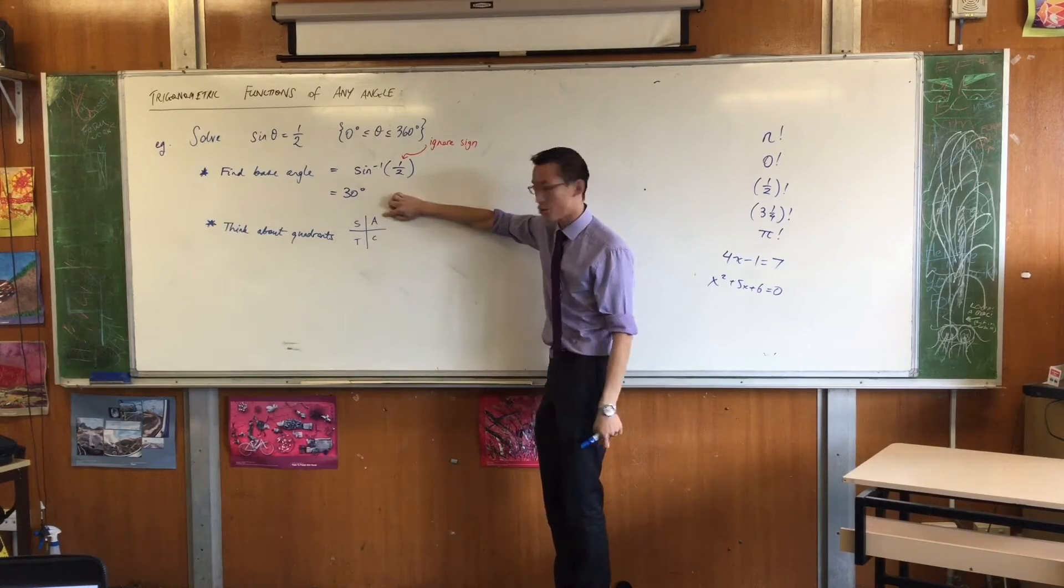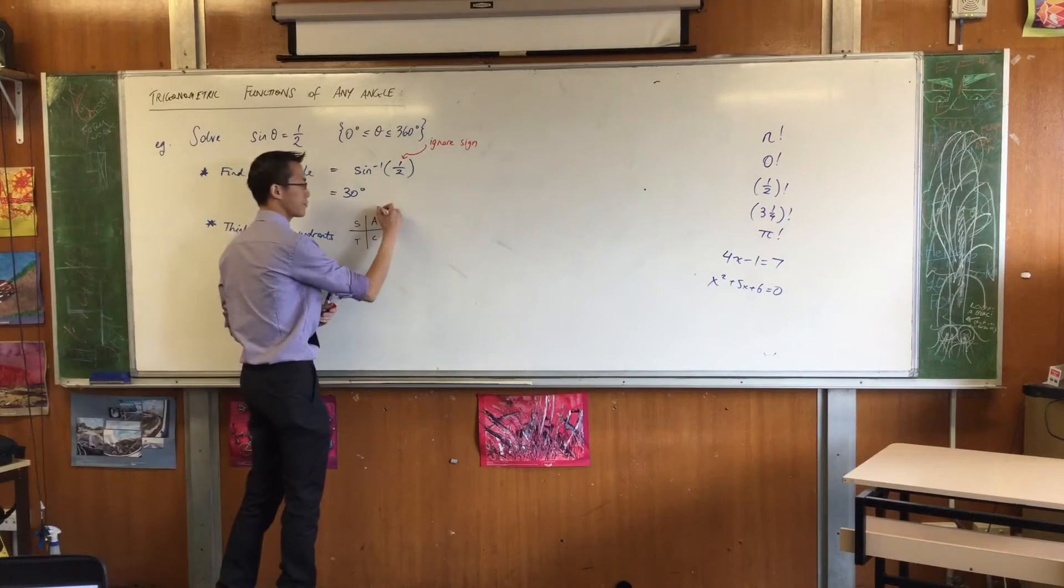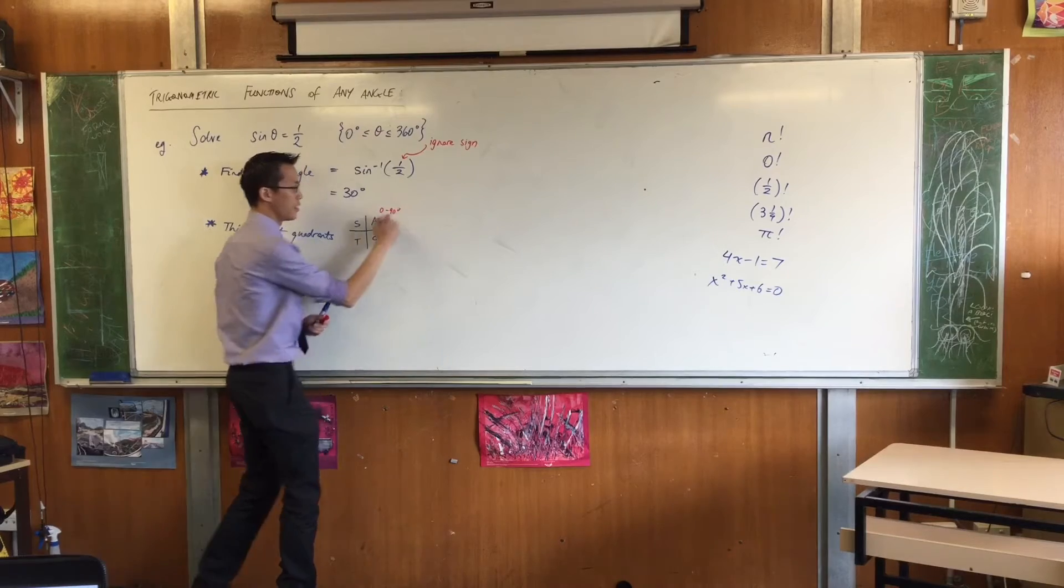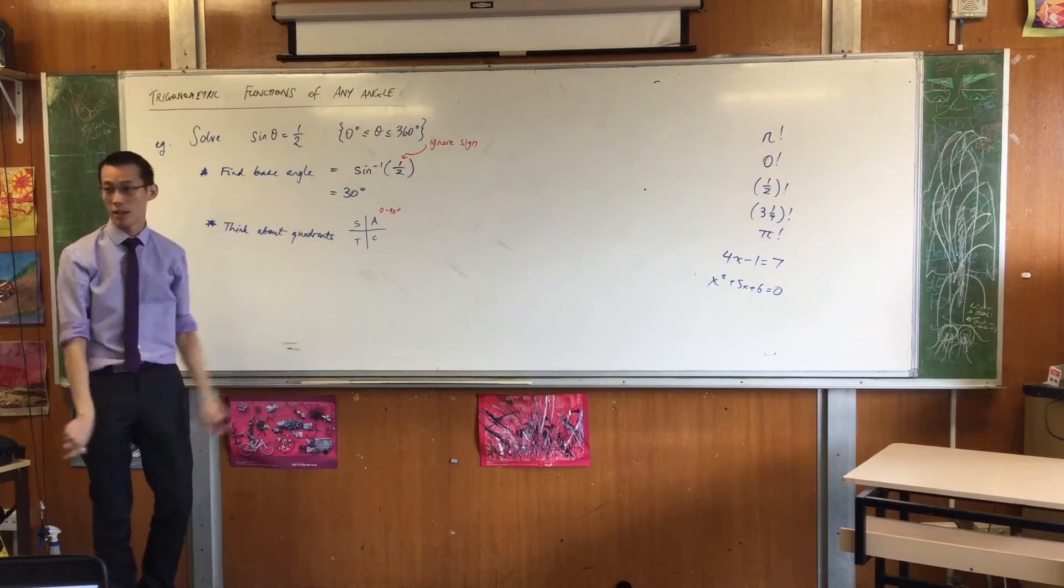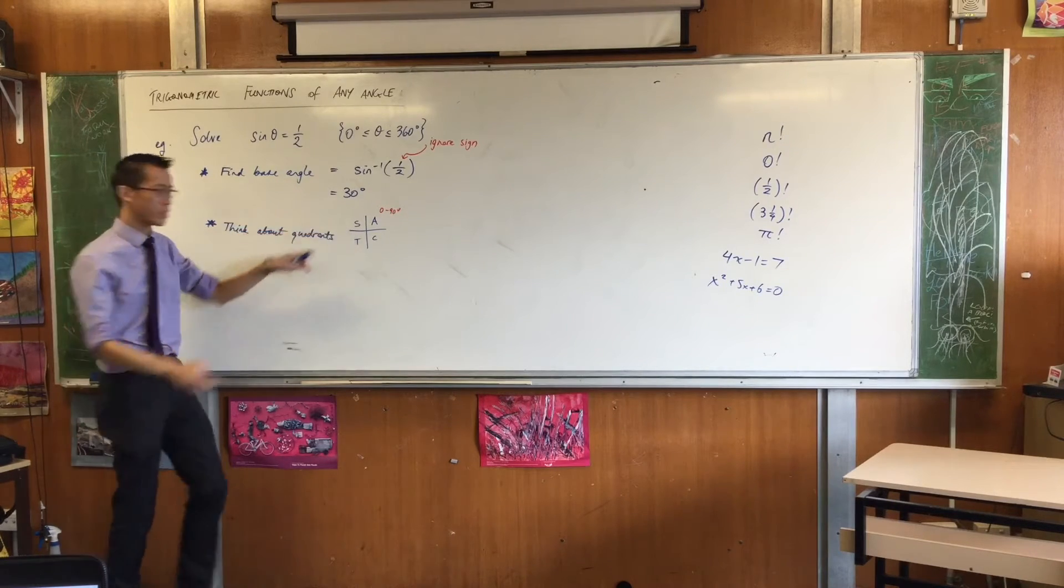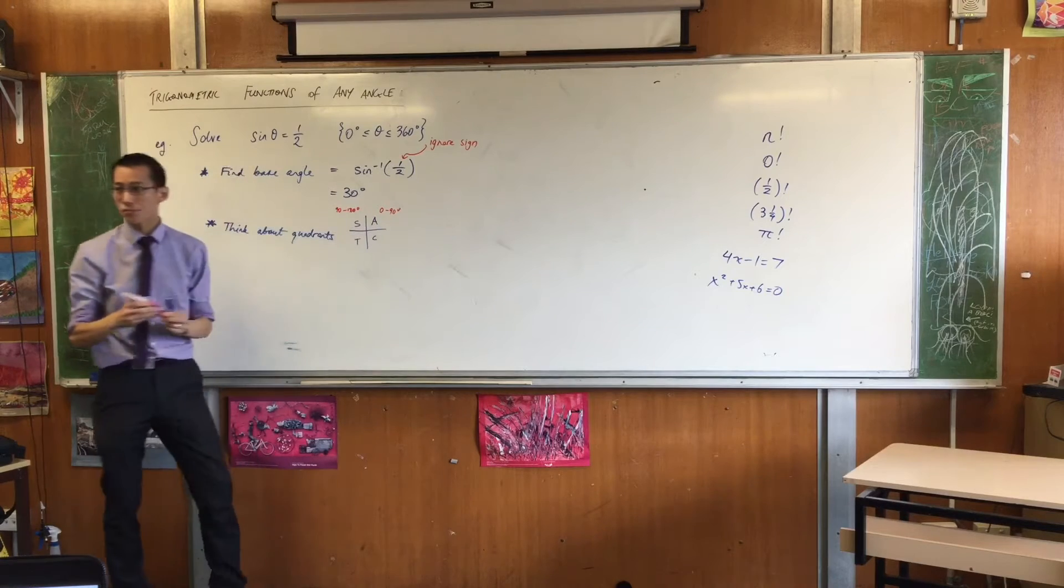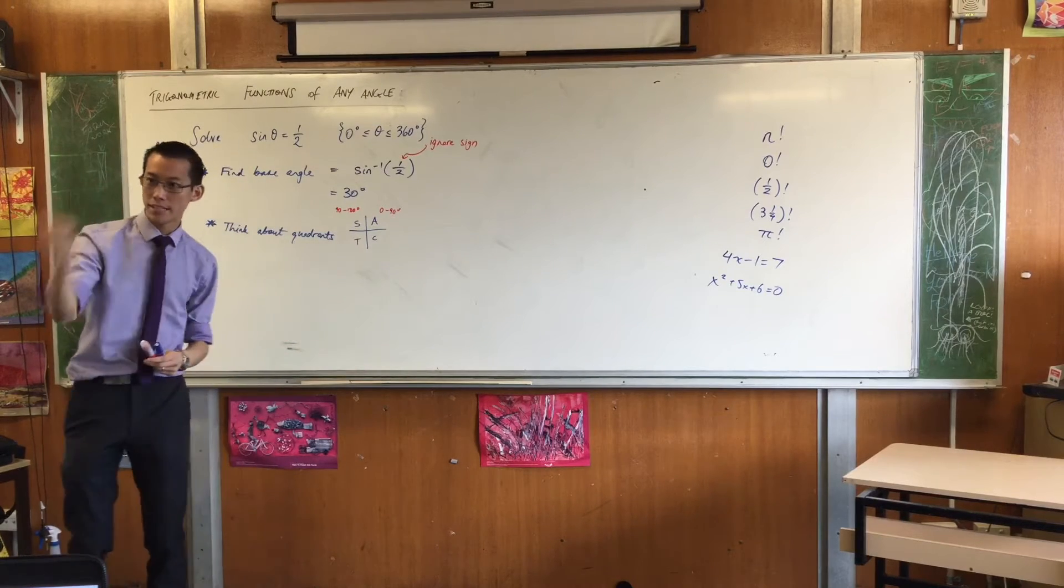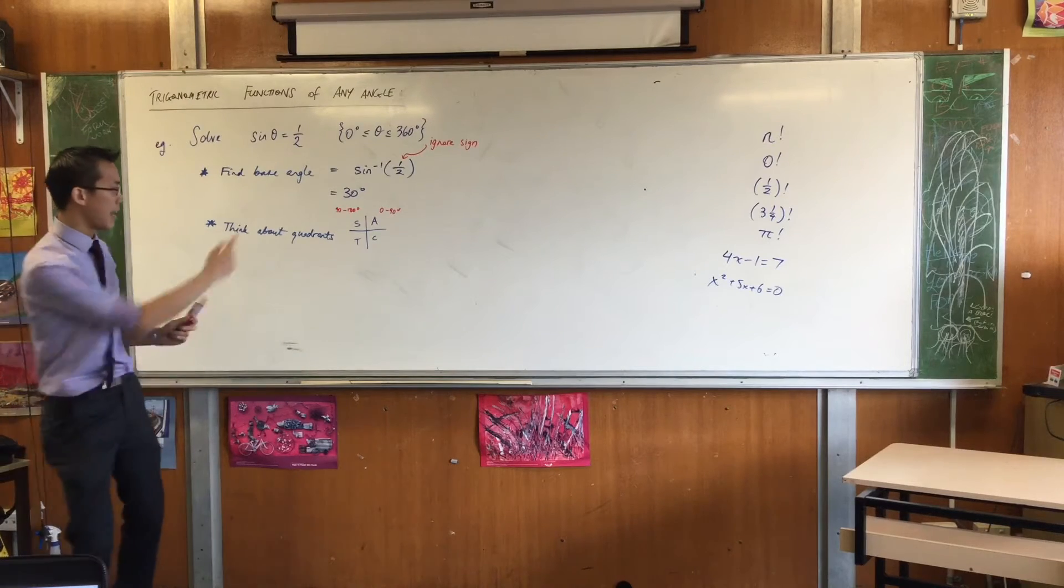So what this means is in the first quadrant, which is 0 to 90 degrees, all of the trig functions sine and cos and tan, they're all positive from 0 to 90. Okay, when you get into the second quadrant, which is 90 to 180 degrees, cosine becomes negative, tan becomes negative, only sine remains as the positive function. And it keeps on going around.